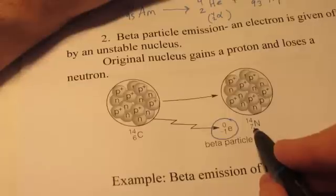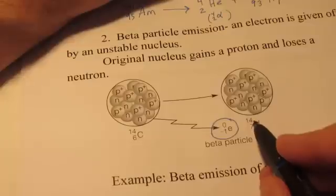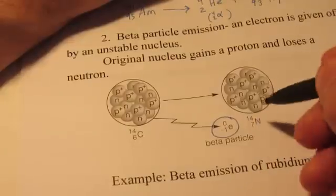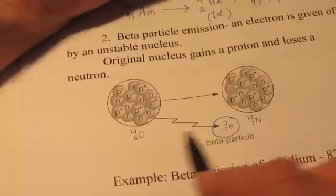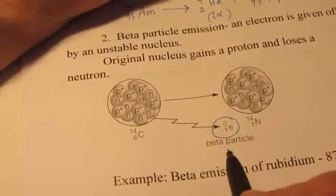So now we have seven protons and we only have seven neutrons now. Because remember, one of them turned into a proton. So the mass is still 14. The mass number remains unchanged, but the atomic number goes up by one during beta emission.